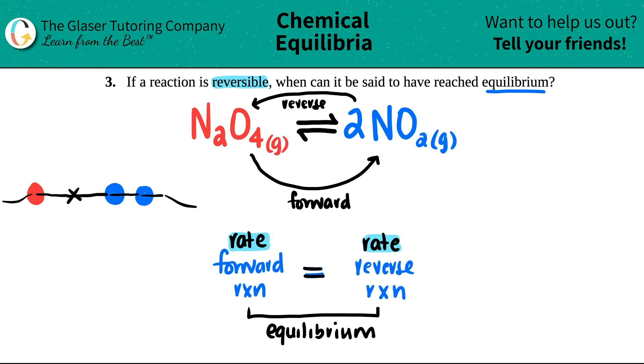The rate. When can it be said to have reached equilibrium? When the rate of the forward reaction equals the rate of the reverse reaction.